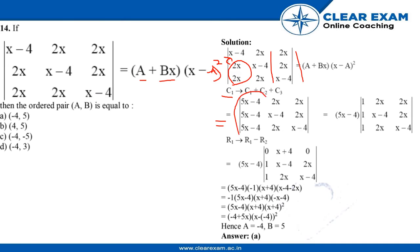In this we have this thing common, we will take this out and the determinant will be (5x - 1)(x - 4). Here we're going to use another property R1 minus R2.